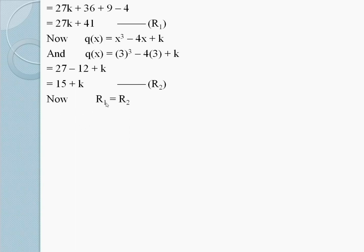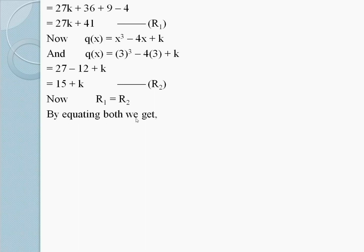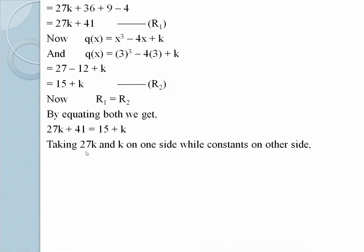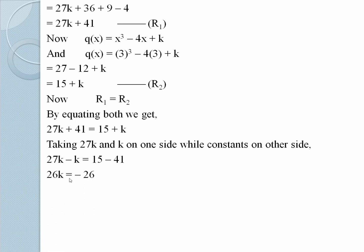Since R1 = R2 according to the question, equating both: 27k + 41 = 15 + k. Taking k terms on one side and constants on the other: 27k - k = 15 - 41, so 26k = -26. Dividing by 26: k = -1 is the required answer.